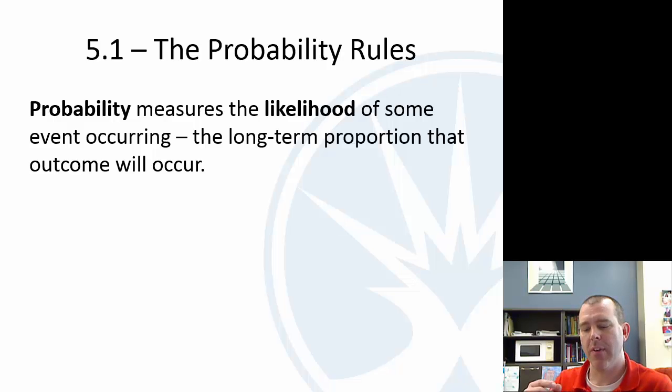The definition here, if we have an event that happens over time, a probability is really just over time, what is the long-term average, the long-term proportion that that event will occur.